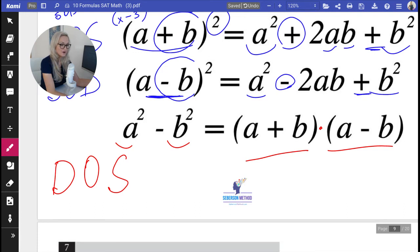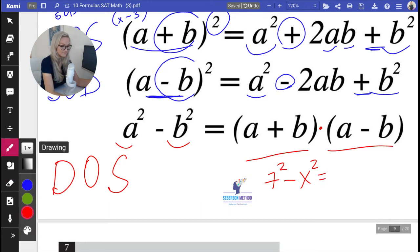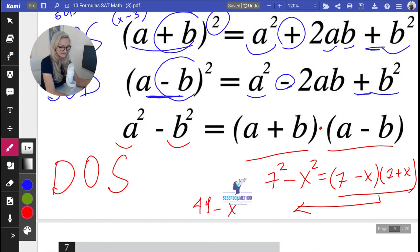You want to be able to know that 7 squared minus x squared, you don't have to have parentheses around that, is going to be 7 minus x, 7 plus x. But also when you see this, you want to be able to go backwards and say, oh, this used to be 49 minus x squared. This is what I mean when I say going from right to left, but also from left to right.